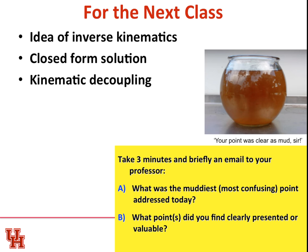All right. So we have introduced today the idea of inverse kinematics. We've described why we want a closed form solution. And we've talked about the idea of kinematic decoupling, showing how we can isolate the orientation and solve for that wrist center. Now what I'd like you to do. I am away at IROS at one of the world's best robotics conferences. But I want to hear from you. Take three minutes and briefly send an email to me. Telling me what's the muddiest point that was addressed today. And also tell me what you thought was well done.